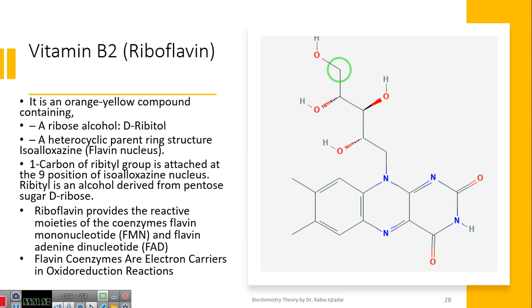And above, we have a nucleus that is flavin nucleus and iso-alloxazine nucleus. Riboflavin provides the reactive moieties of the co-enzyme flavin mononucleotide FMN and flavin adenine dinucleotide. They are two very important enzymes. They take part in many metabolic activities.